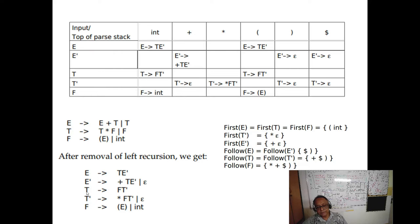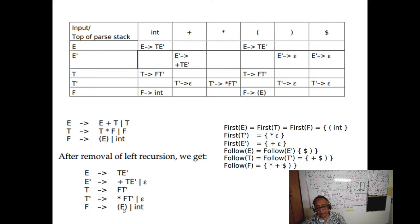Now we calculate FIRST(T'). FIRST(T') is star, because T' → star f | ε. Then FIRST(E') is plus, because E' → plus T E' | ε. Now FOLLOW(E): you always put dollar first, and from the rule you can see a closing parenthesis after e, so FOLLOW(E) = {$, )}. What should be the follow of T? It comes from FIRST(E'). FIRST(E') is {plus, ε} — epsilon cannot be included in follow — so plus is there, and since E' can go to epsilon, dollar is added too.